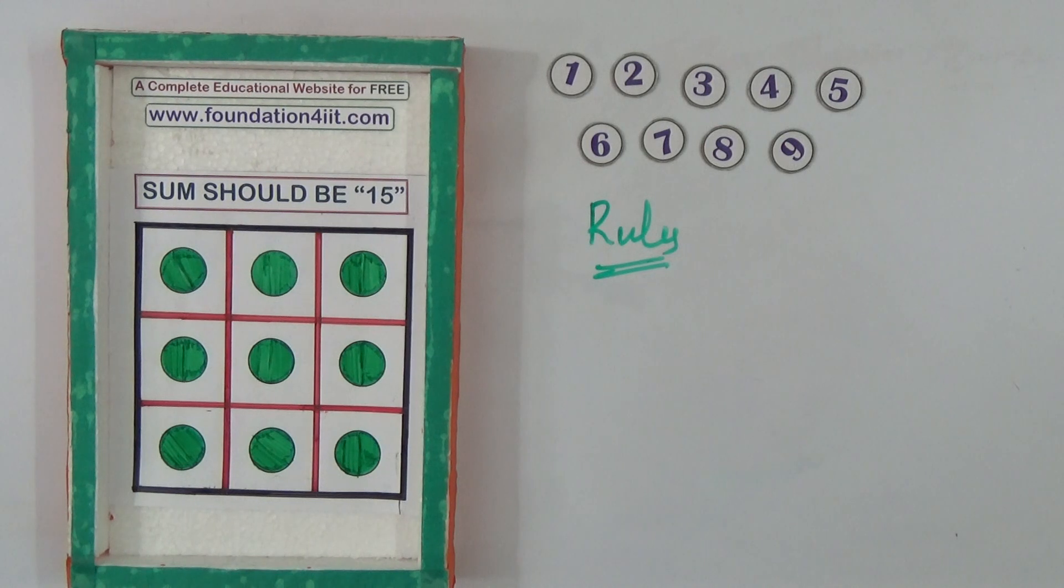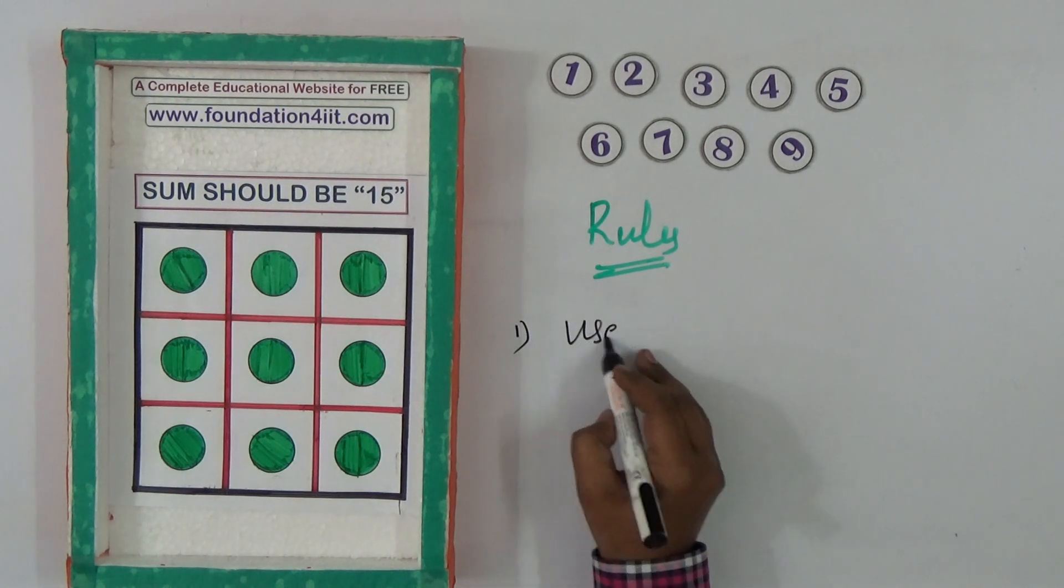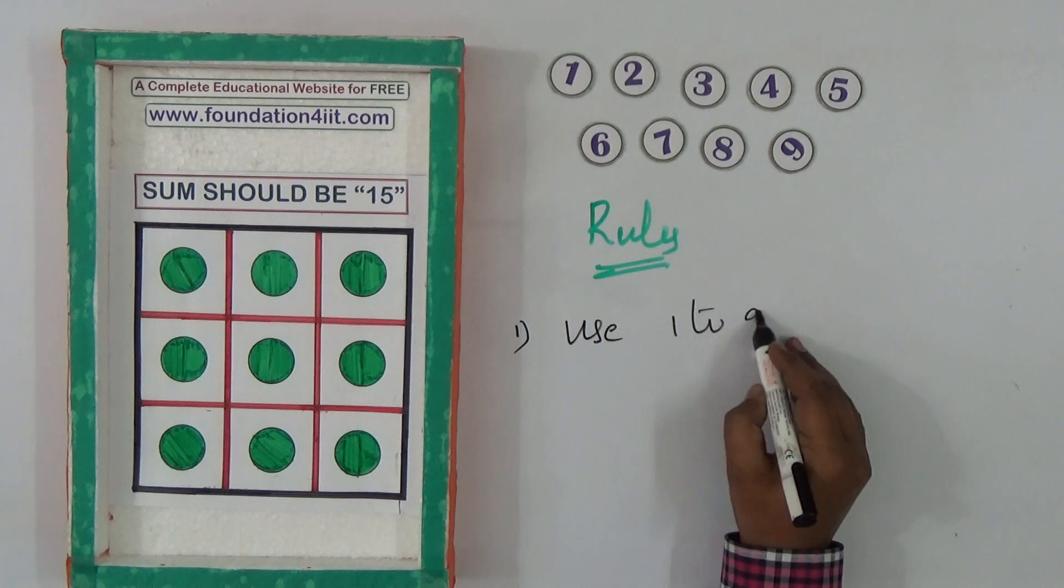If you observe the rules, what rules we need to follow? First one, use only 1 to 9 numbers. So only 1 to 9 digits I need to use.